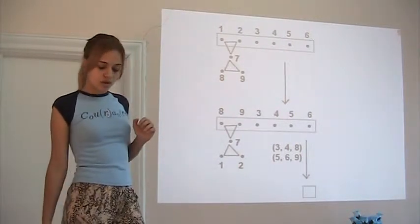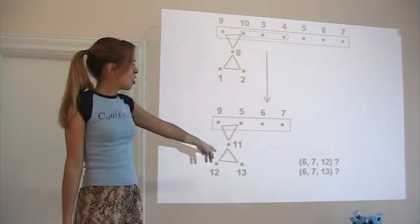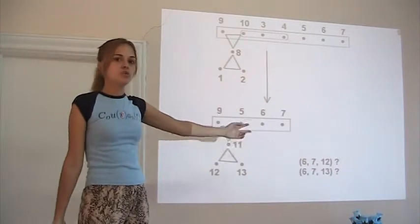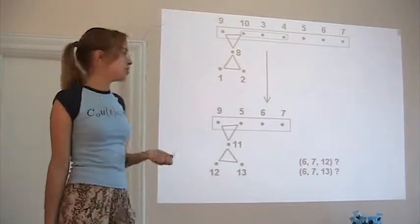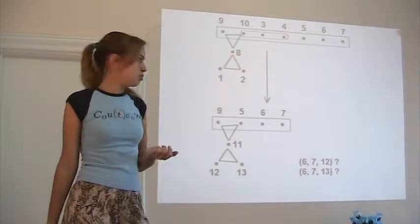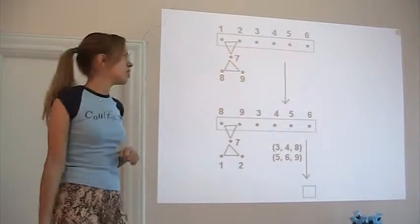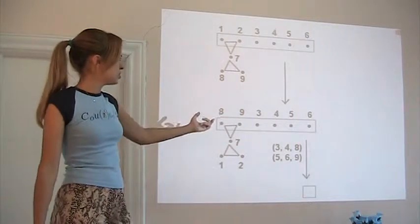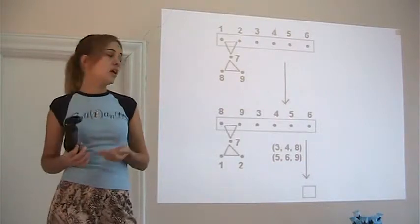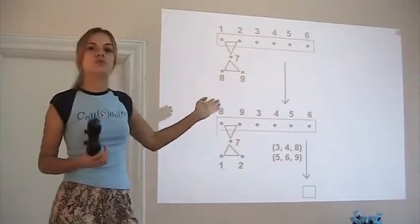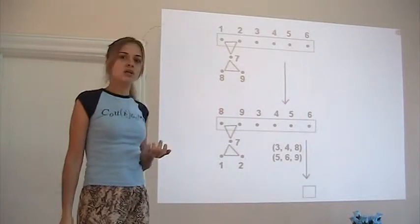Because here, the chance of one of these things happening is 2 over n. Because 6 and 7 have n possibilities for the third. And 2 of them are good. So it's 2 over n. But here, it's more like 1 over n squared. Because we need the third of the (3,4) pair to be a specific thing. And at the same time, the third for the pair (5,6) has to be a specific thing. So it's harder to happen.